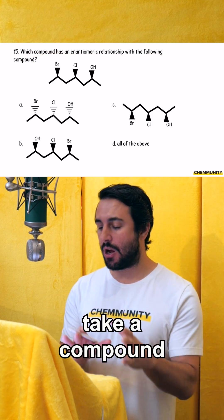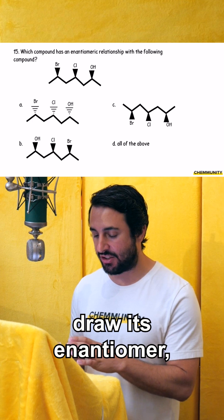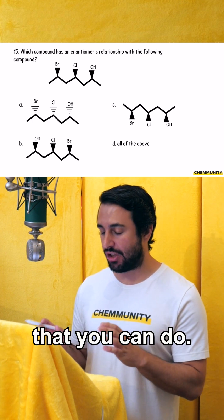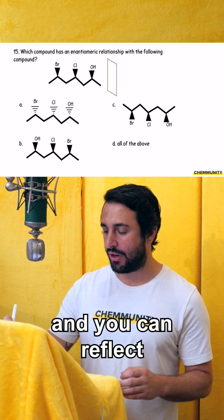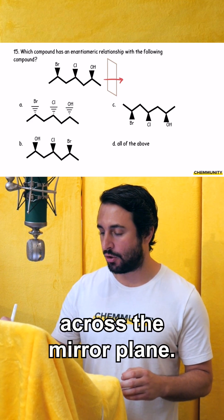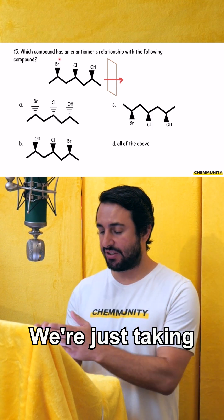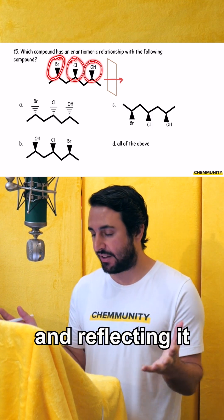If you want to take a compound and you want to draw its enantiomer, there are a couple of things that you can do. You can either put a mirror plane right here and you can reflect the compound across the mirror plane. We're just taking every single point and reflecting it across the mirror plane.